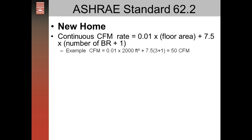This demonstration will show entering data into Tektite 4.0 for it to calculate the ASHRAE 62.2 ventilation standard. If it's a new home, the way it will calculate the continuous CFM rate is .01 times the floor area times 7.5 times the number of bedrooms plus one. That formula is pretty straightforward to calculate the continuous CFM rate.